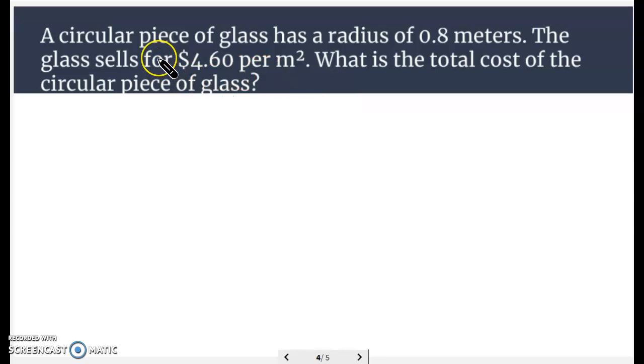Application problem here. A circular piece of glass has a radius of 0.8 meters. The glass sells for $4.60 per square meter. What is the total cost of the circular piece of glass? So basically to find this, we're going to take the area times the cost per square meter.